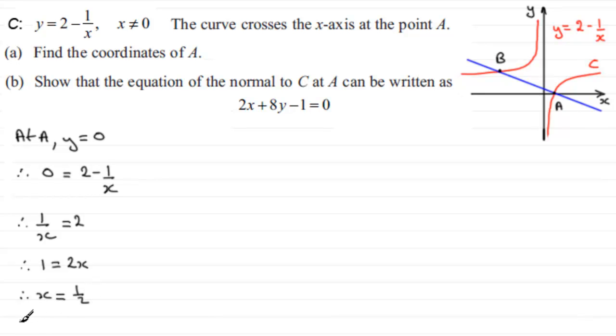So, therefore, the coordinates of A are going to be 1 half and then 0. Alright, so that is part A of our question.